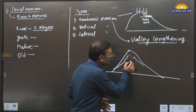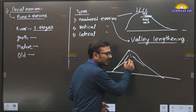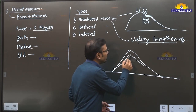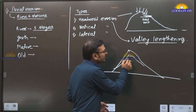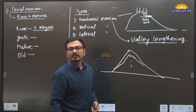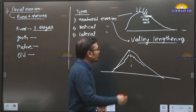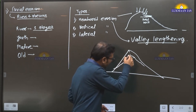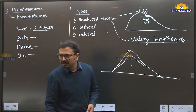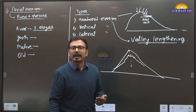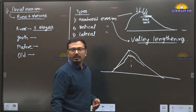Suppose these are the steeper slopes. So what will happen? It will have more erosion power and it will try to do more headward erosion. Because of this headward erosion, it will reach up to this point and it will cut that ridge, creating a new passage for this river to flow in this direction.